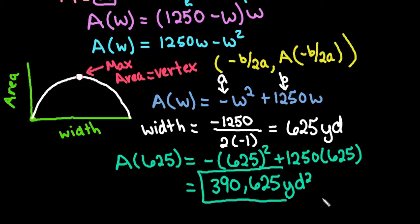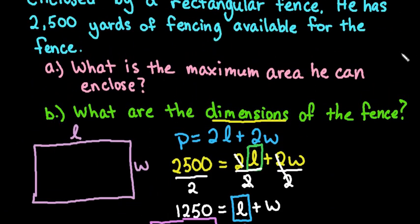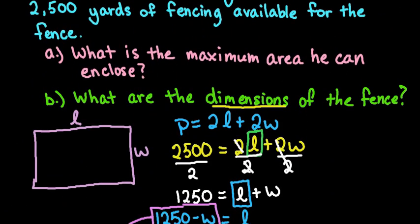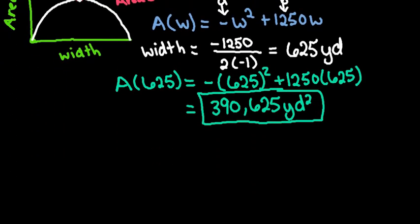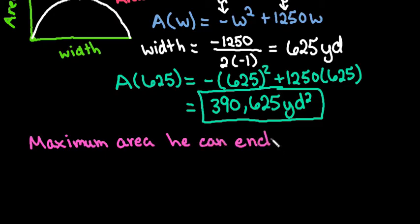Okay, so the first thing that they asked us to find, back up here, I know I've done a lot of work, this is a long process. The maximum area he can enclose is going to be the 390,625. Okay, so the maximum area he can enclose, or the farmer can enclose, is 390,625 square yards.